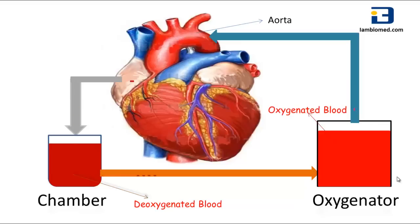At the end of the operation, the surgeon gradually allows the patient's heart to resume its normal function and the heart lung machine is taken off. It can also deliver medications into the recirculated blood, minimizes blood loss by recirculating the blood, and there are also temperature sensors that preserve the heart's temperature.